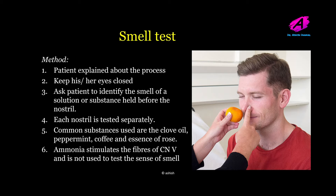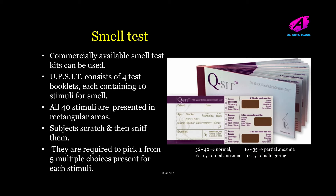With the smell test we are checking the function of the olfactory nerve, the first cranial nerve. The patient is explained about the procedure and asked to keep his or her eyes closed, then asked to identify the smell of a solution or substance held before the nostril. Each nostril is tested separately. Common substances used are clove oil, peppermint, coffee, and essence of rose. Ammonia stimulates the fibers of cranial nerve five and is not used to test the sense of smell, as the patient may feel a pungent smell due to irritation of the fifth cranial nerve rather than actual olfaction.